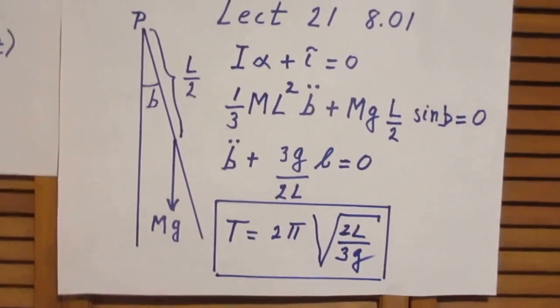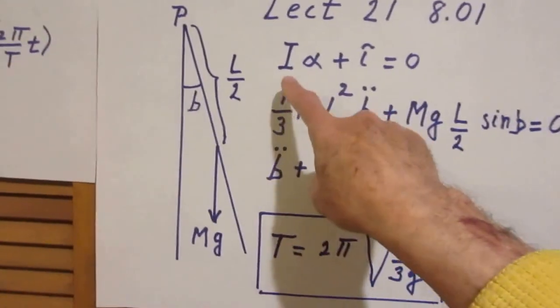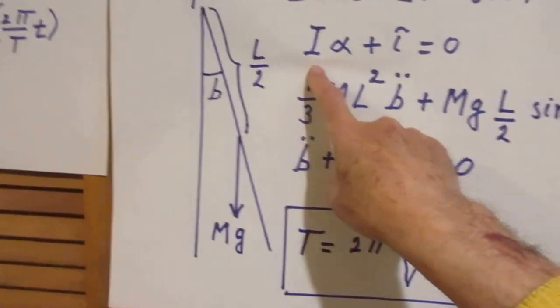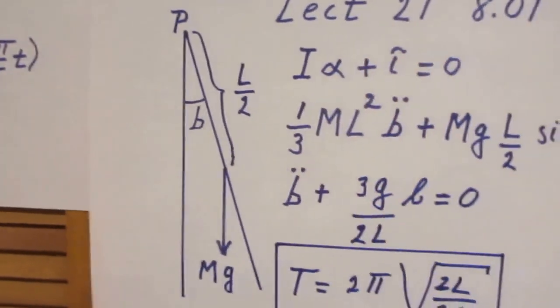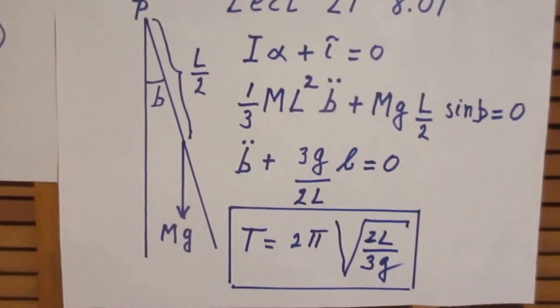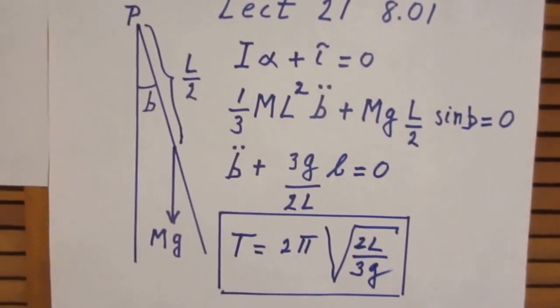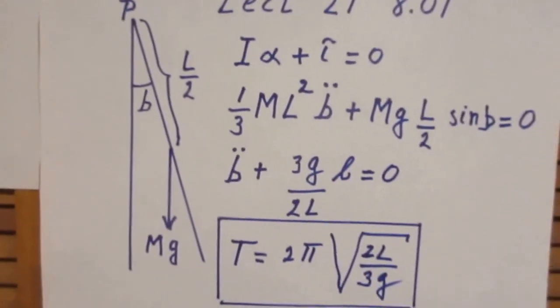So in lecture 21 of 801, you will find that I alpha, I is the moment of inertia, in this case the moment of inertia for rotation about P, times alpha, which is the second derivative of the angle, we call that therefore the angle acceleration, plus the torque relative to point P is zero.